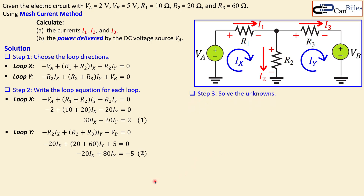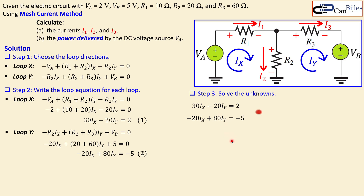Step three is to solve for the unknowns. We need to solve for IX and IY first, and from those we get I1, I2, and I3. Bringing the two equations together, we can solve this in different ways — using a matrix-vector form, or by multiplying one equation to allow addition or subtraction to eliminate one unknown. I'll demonstrate the elimination approach step by step.